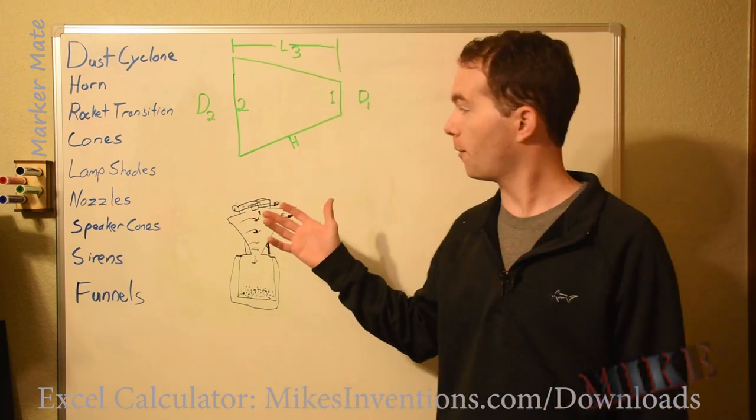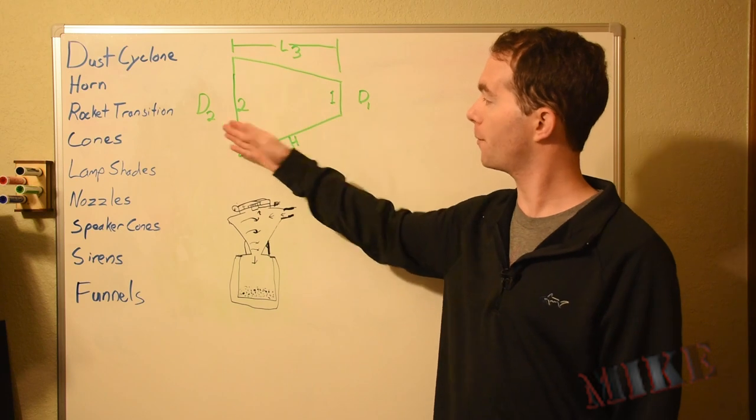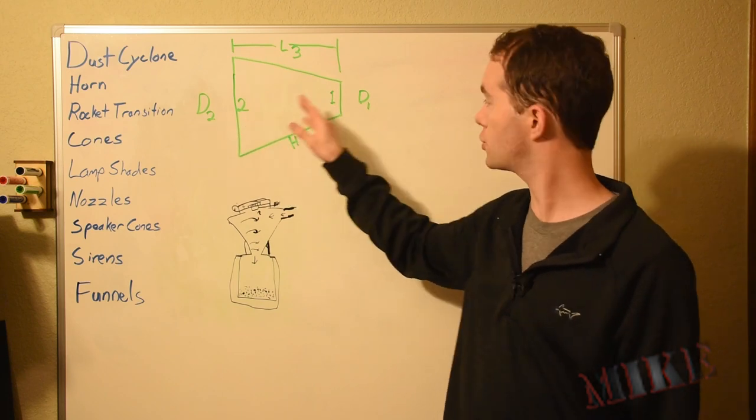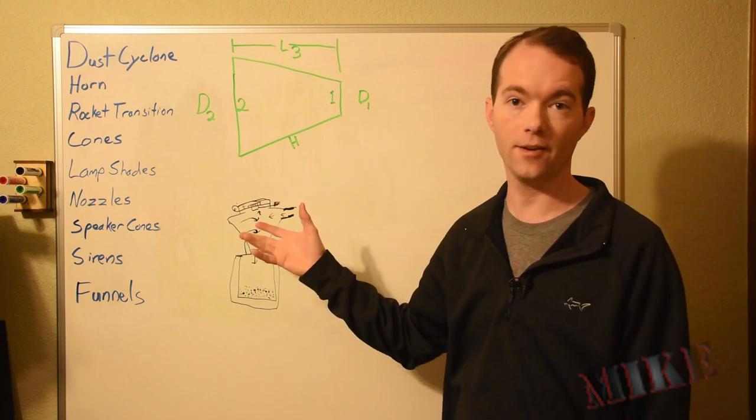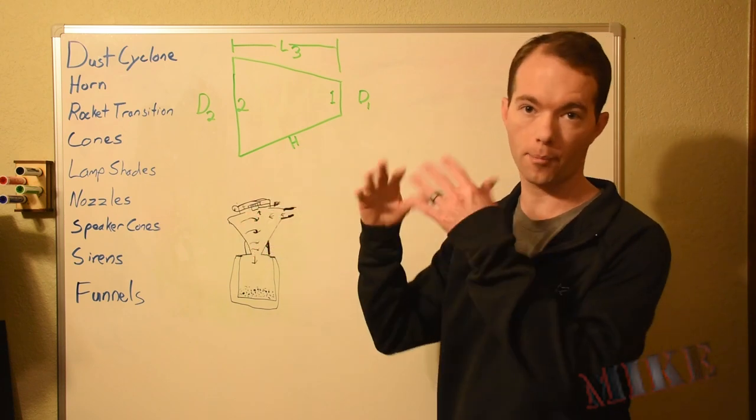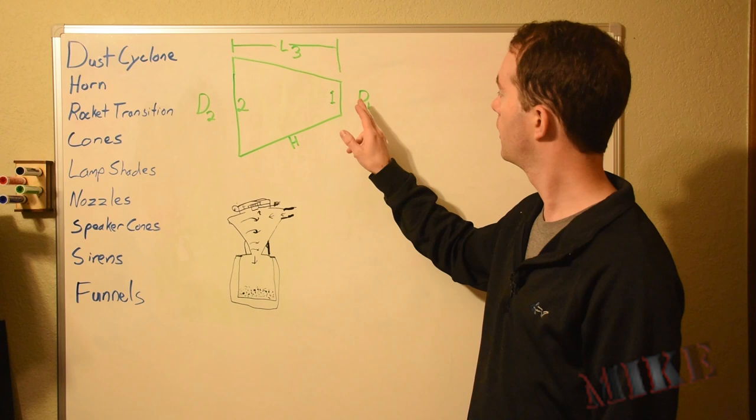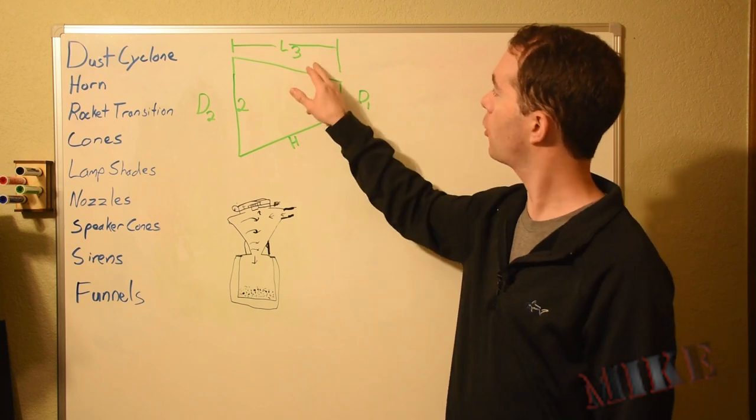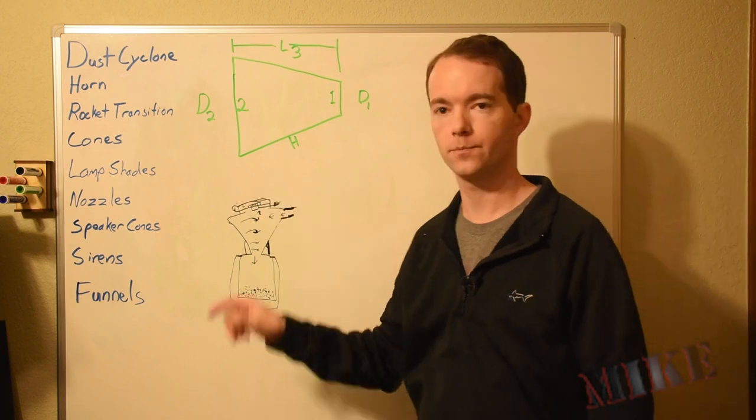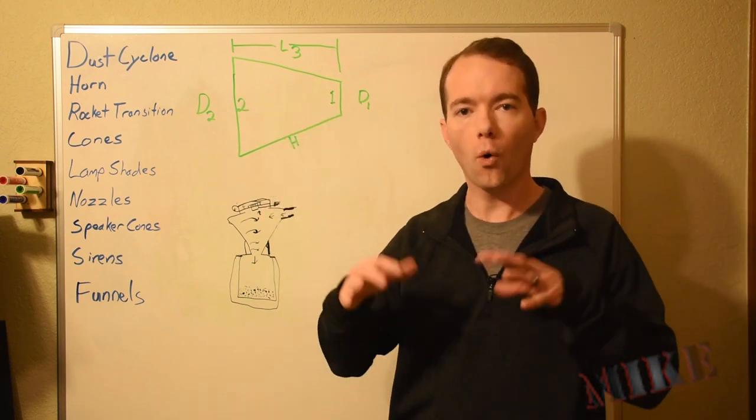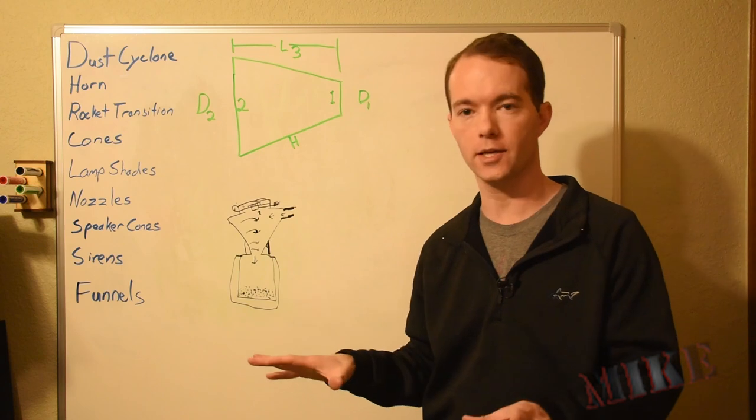So let's say, for example, that you want to make a shape like this. Your large diameter, we're going to call D2, of two inches or two units. We'll use inches in this case because I'm going to show you at the end how this actually works. D1 is one. We're going to call this length of three. And then there's this H here, hypotenuse. So given these three inputs, what are the outputs to be able to trace this?